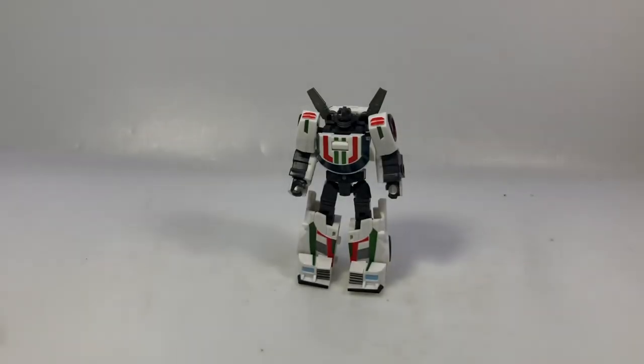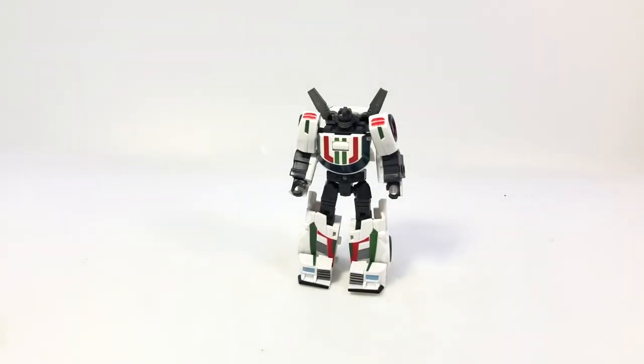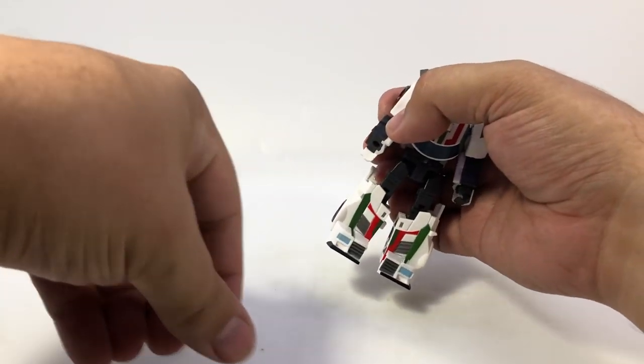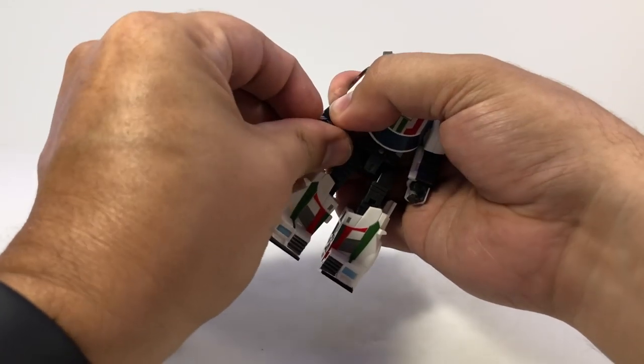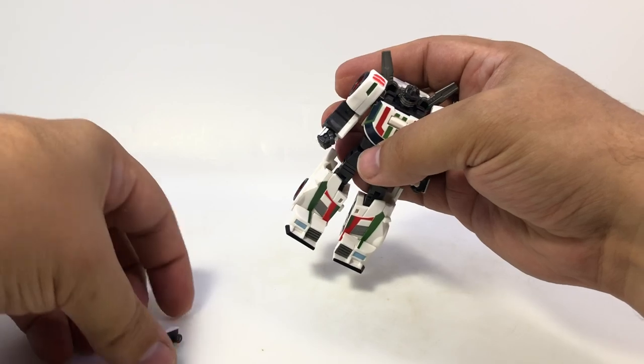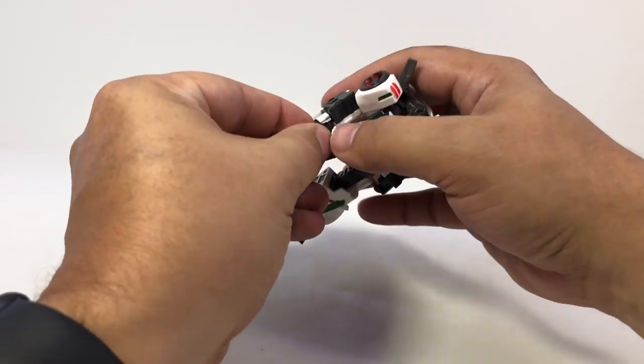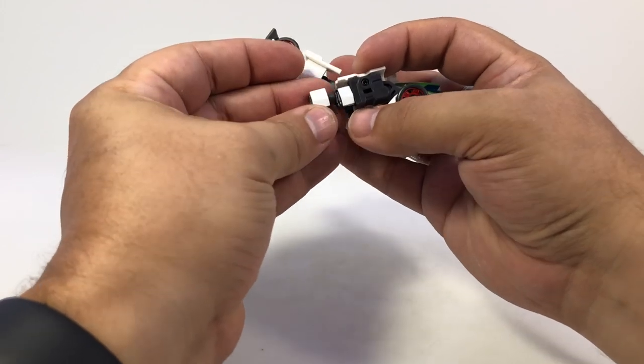I mentioned the swappable fists. Like I said, you don't have to do anything to him - he's already designed to take these fists. You just pop off the old fist, just pull it out, put a new one on. He comes with these closed fists versus the open fist for holding the weapons. They work just fine.